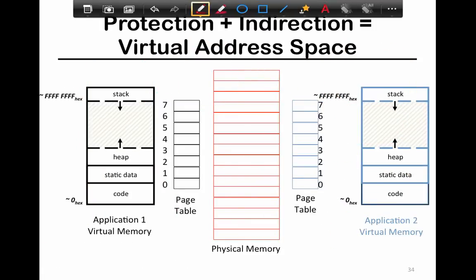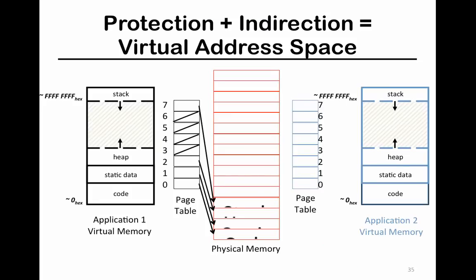So in your virtual address space, you have your page table. I'm going to show you how protection and indirection are achieved together. First, you have your virtual page set up, and I'm showing you the mapping of the first application here.